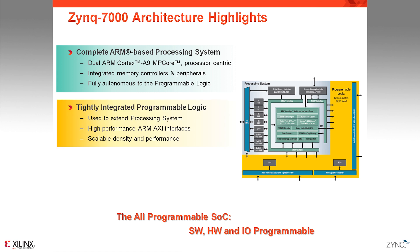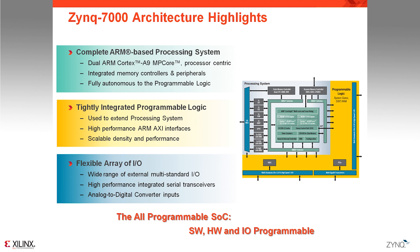The hardware programmable aspect comes from the addition of a tightly coupled programmable logic, which is used to extend the capability of the ARM processing system by adding peripherals or accelerators. This gives designers the possibility to create their own version of a processor to target their own applications. Lastly, the I/O programmability is achieved through a large set of I/Os and transceivers. The mix between standard I/Os, analog inputs, and transceivers enables them to communicate directly with almost all elements of your current and future systems.